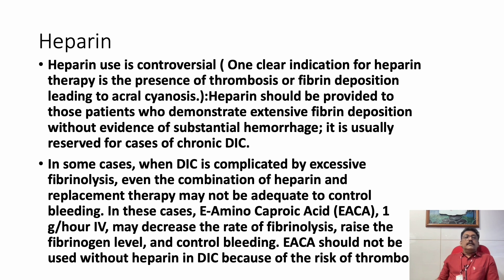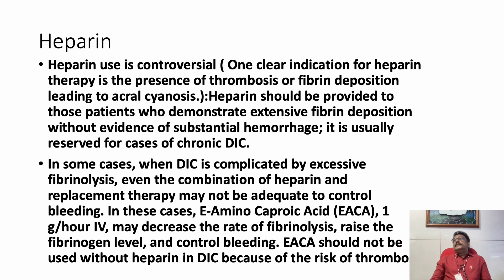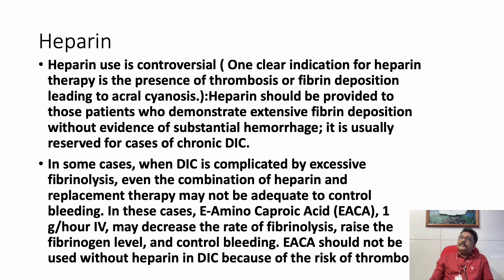Heparin is controversial in DIC. If DIC is picked up in the early thrombotic phase, heparin can be helpful. However, once the patient develops bleeding tendency, heparin is dangerous. Heparin can produce both clinical deterioration and laboratory deterioration by increasing APTT and causing bleeding tendency. It should be used only in the early phase of the disease, with great caution.